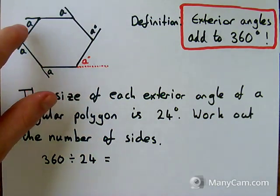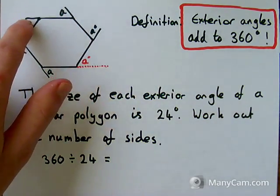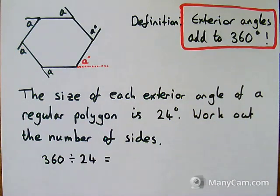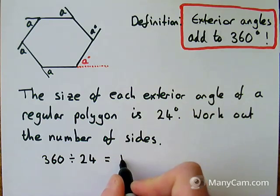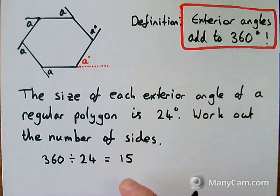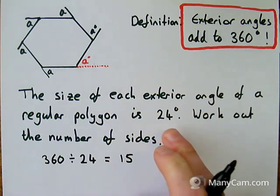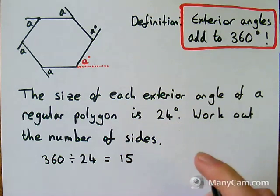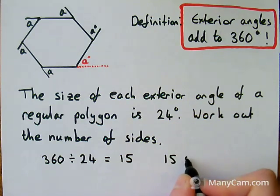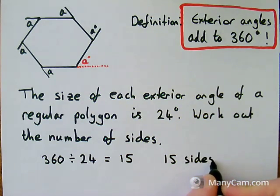Technically this gives me how many exterior angles I have, but the amount of exterior angles is exactly the same as the amount of sides I have. So 360 divided by 24 gives me 15. So a regular polygon where each exterior angle is 24 degrees would have 15 sides. Thank you for watching. Goodbye.